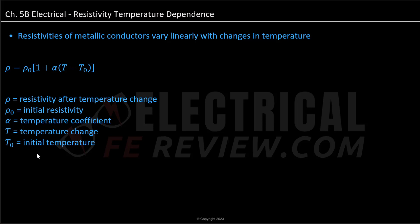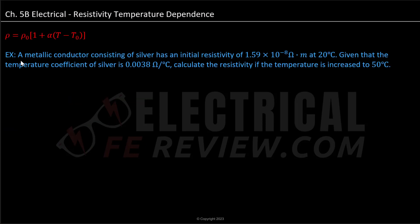Let's go ahead and look at an example. We have a metallic conductor consisting of silver, with an initial resistivity of 1.59 times 10 to the negative eighth power ohms times meters at 20 degrees Celsius. Given that the temperature coefficient of silver is 0.0038 ohms divided by Celsius, calculate the resistivity if the temperature is increased to 50 degrees Celsius.